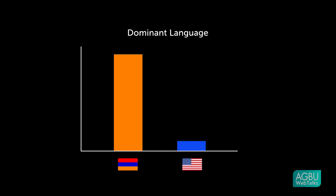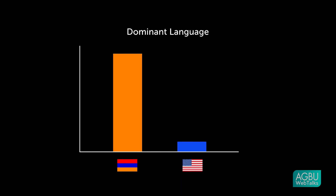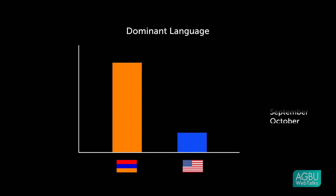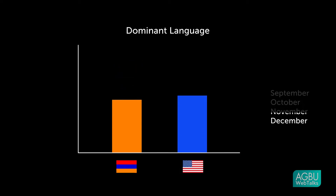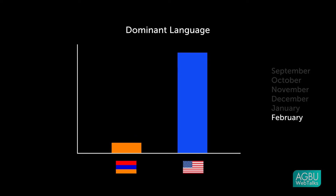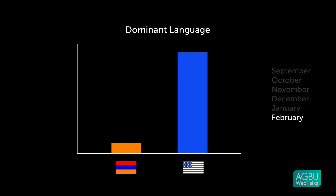If you were to map it on a graph at age five or six, which is when they step foot into an educational institution — and this could be an Armenian school as well, it really doesn't matter — within six months they will switch from Armenian dominant to English dominant, if they were Armenian dominant to begin with. Because often now in families, they're exposed to both English and Armenian at the same time.